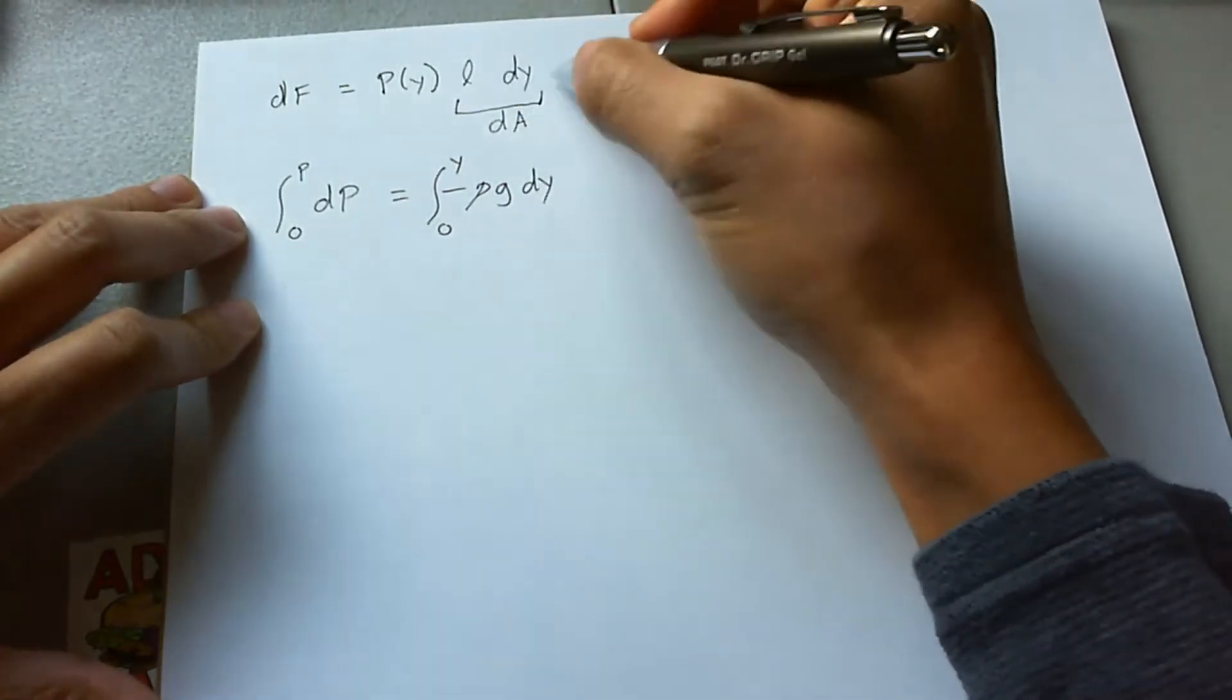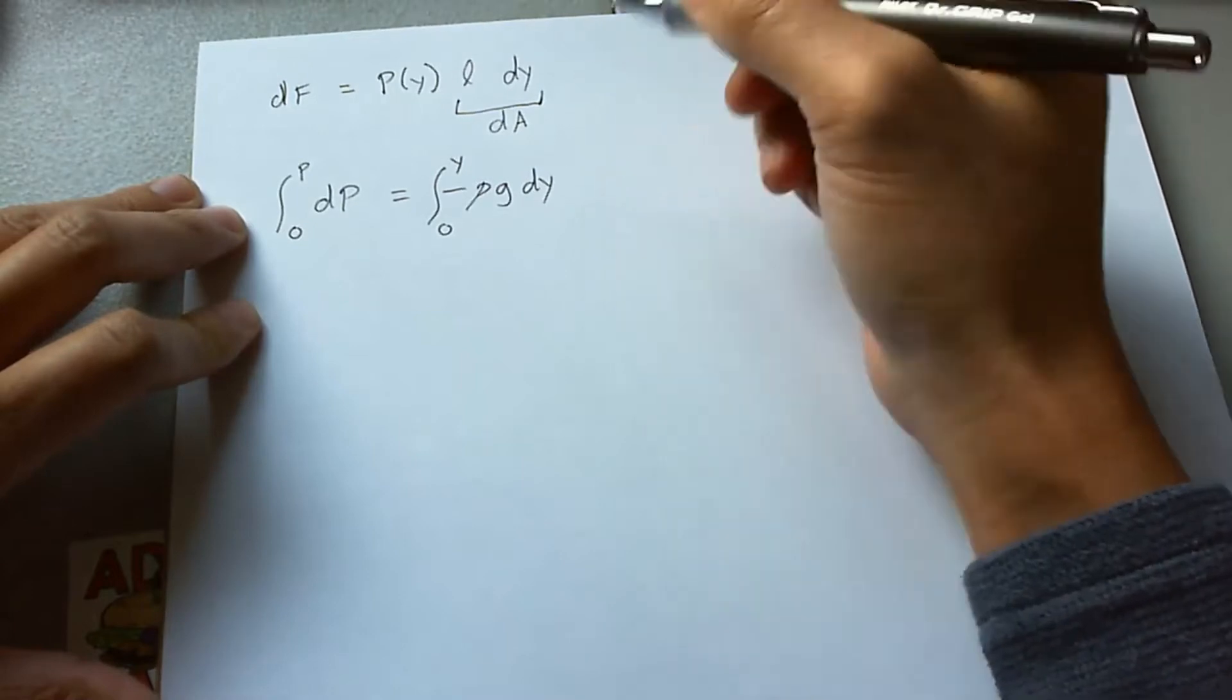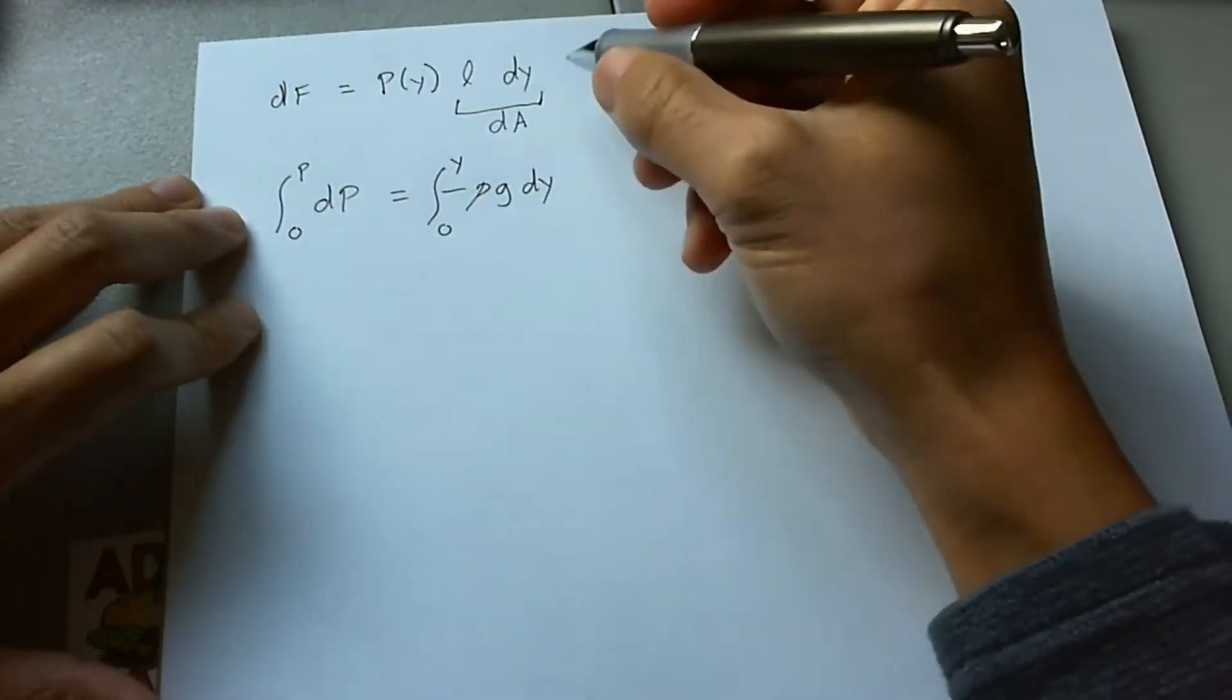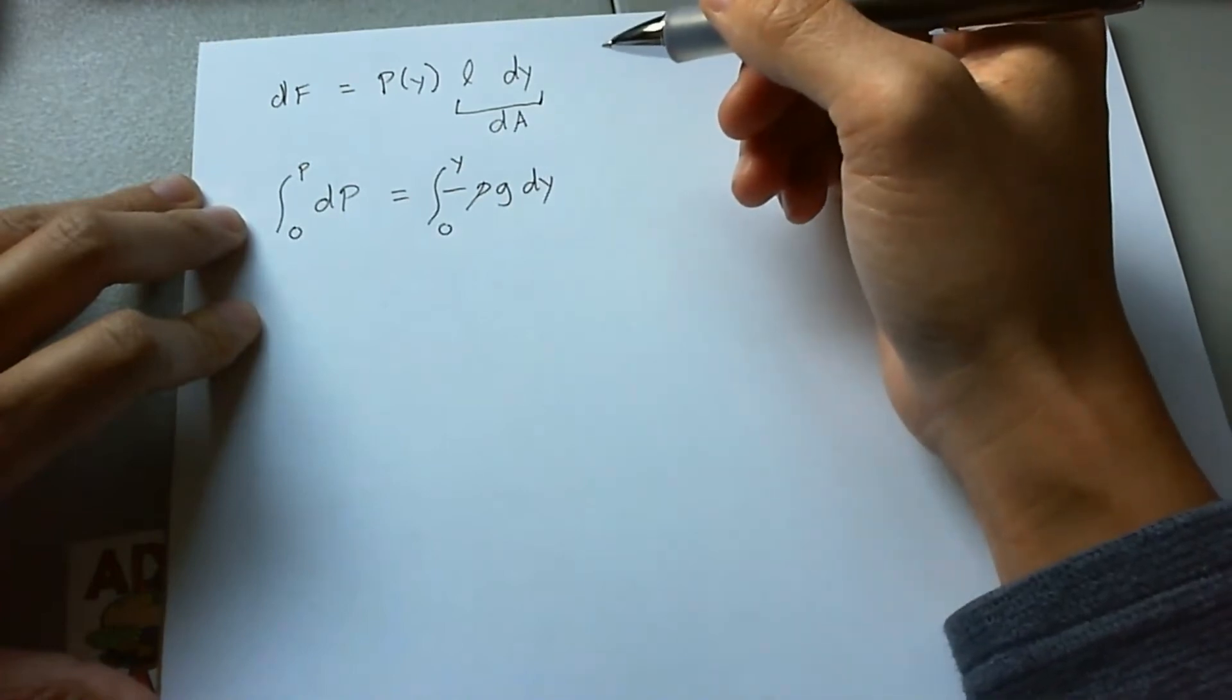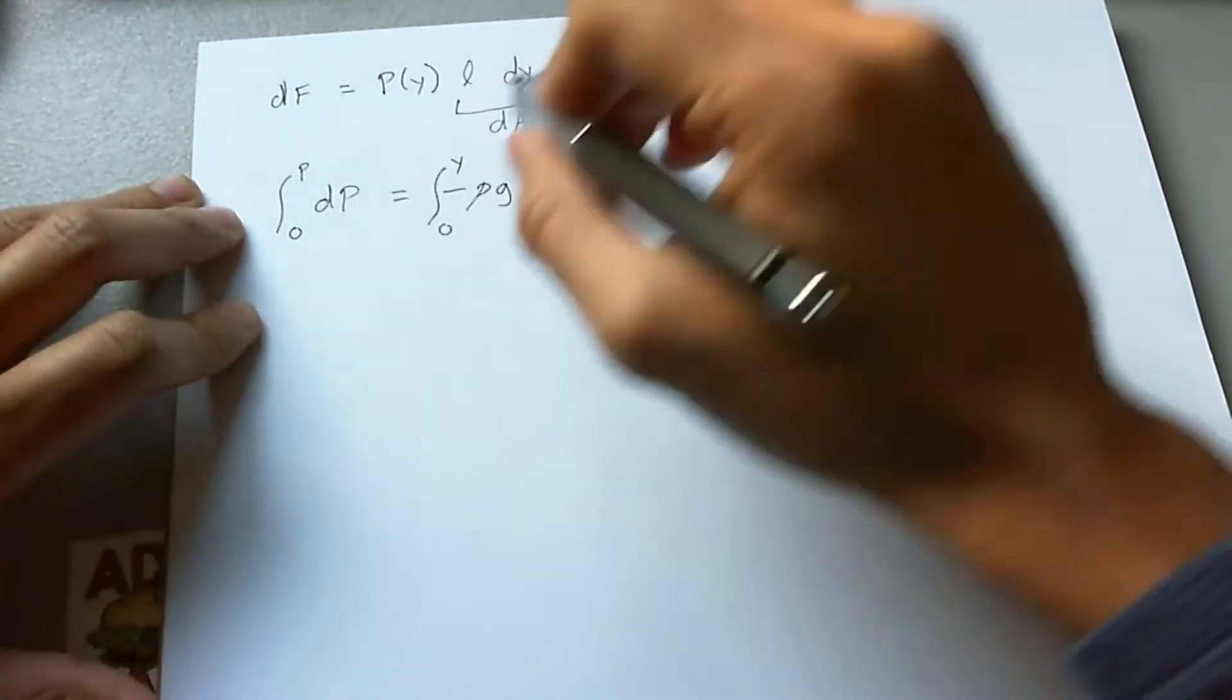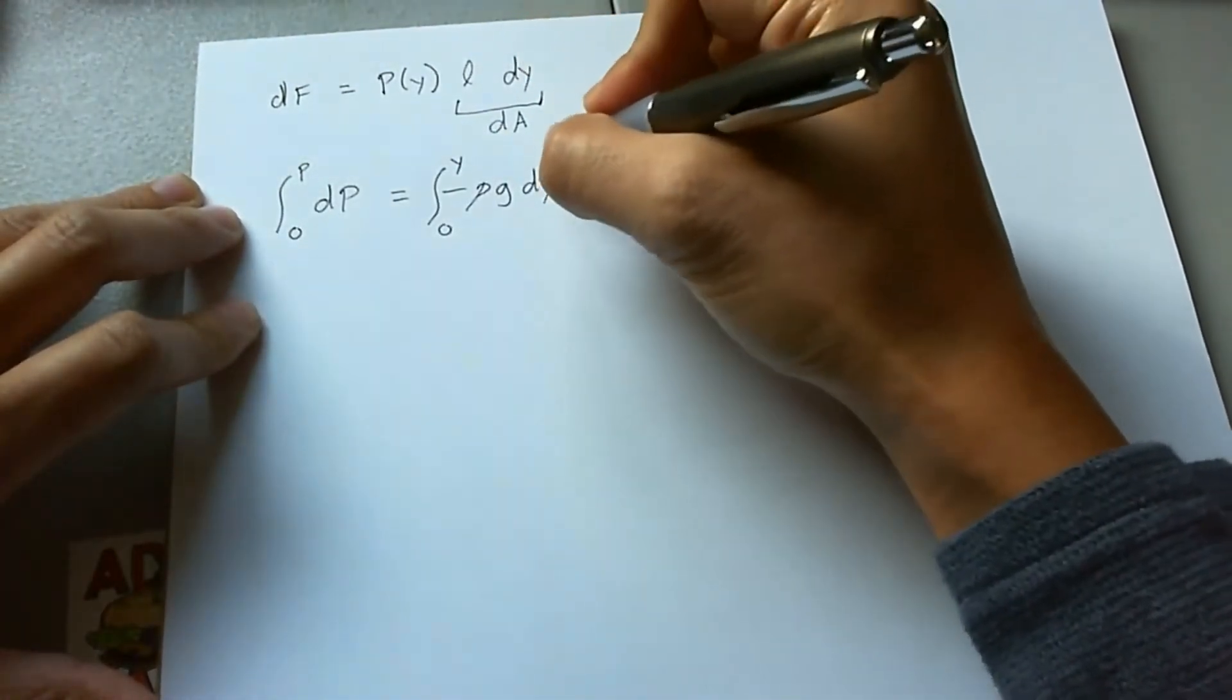Now, the thing is, the two y's don't necessarily correlate. And this is because the window, as we've seen from the problem, starts out one meter below the surface anyway. So these aren't going to be the same y, and we should definitely realize that. That being the case, let's go ahead and first solve for dP in terms of y, and then we'll figure out what each one means.